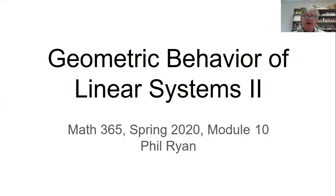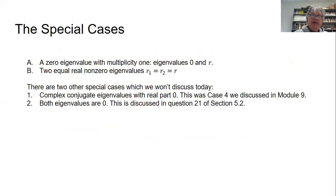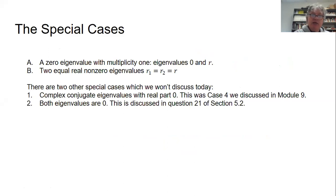Let's do our second part for section 5.2, where we look at the geometric behaviour of linear systems. Last time we looked at six cases of different kinds of eigenvalues, and we saw how that affected the geometric behaviour in the phase plane. Today I want to finish up looking at the special cases, and I'll explain later what I mean by a special case.